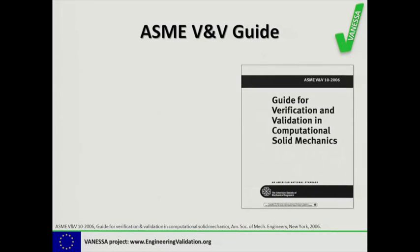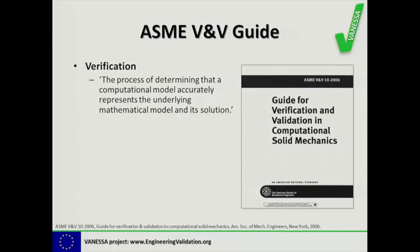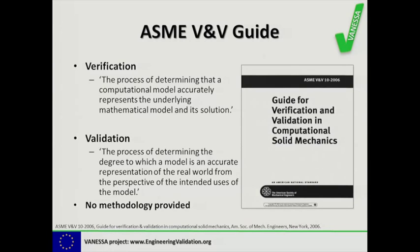So an alternative source of a definition is the ASME V&V guide, or Verification and Validation in Computational Solid Mechanics. In there, they provide definitions of both verification and validation. Verification is the process of determining that a computational model accurately represents the underlying mathematical model and its solution. Validation, on the other hand, is the process of determining the degree to which a model is an accurate representation of the real world from the perspective of the intended uses of the model.